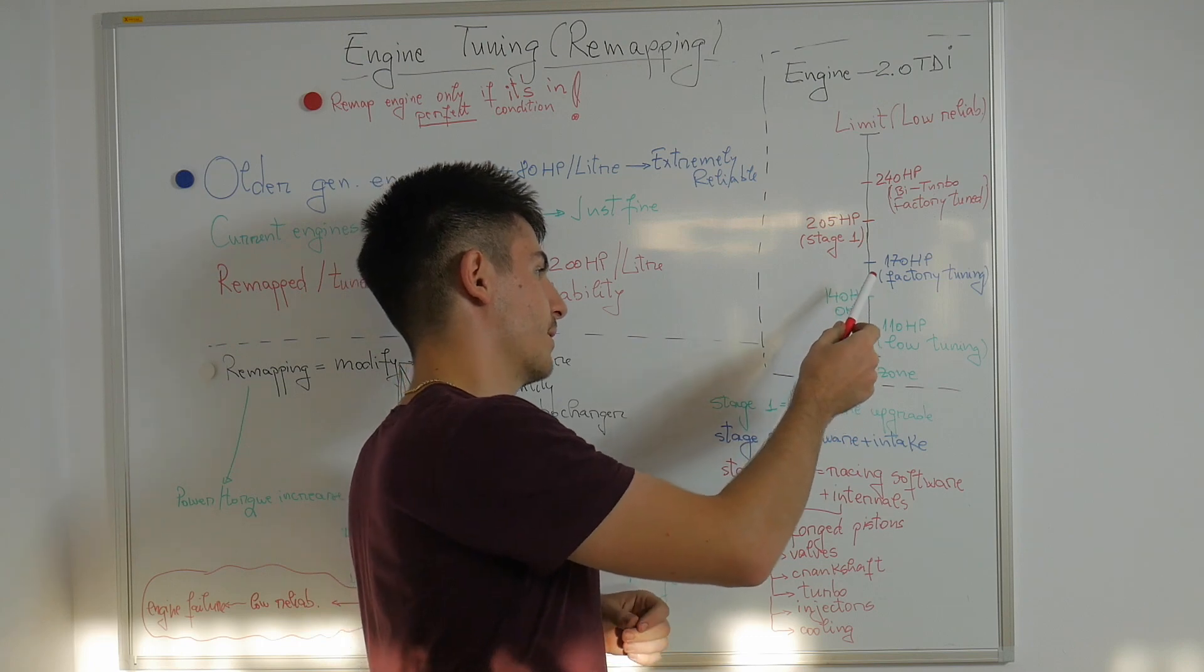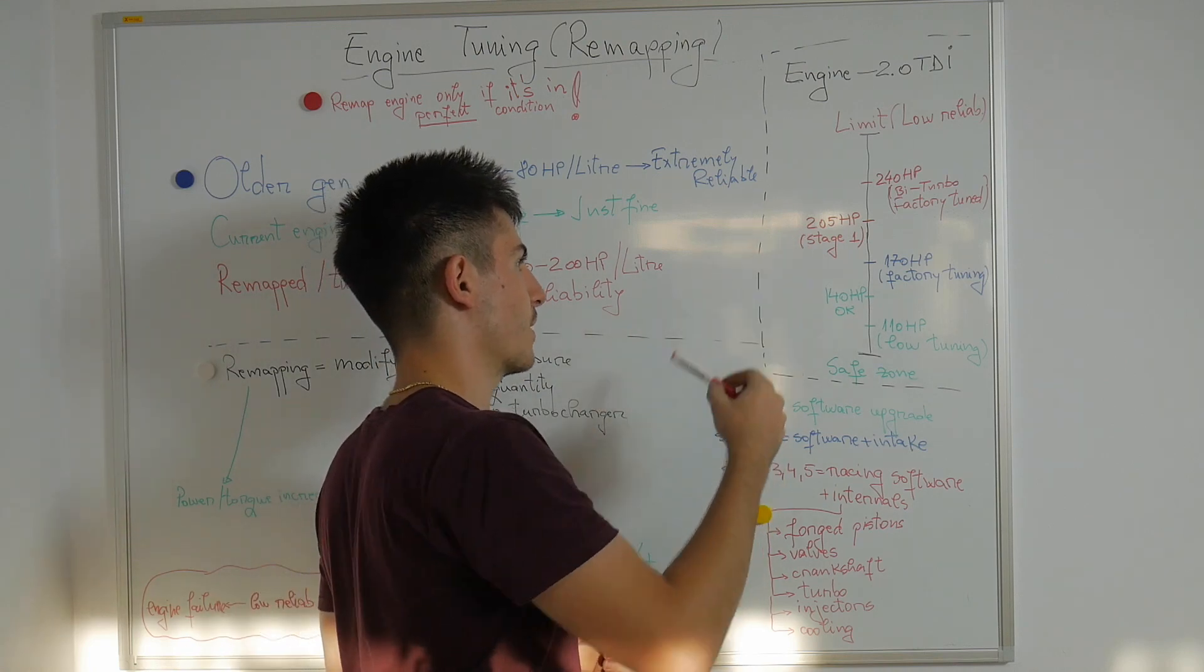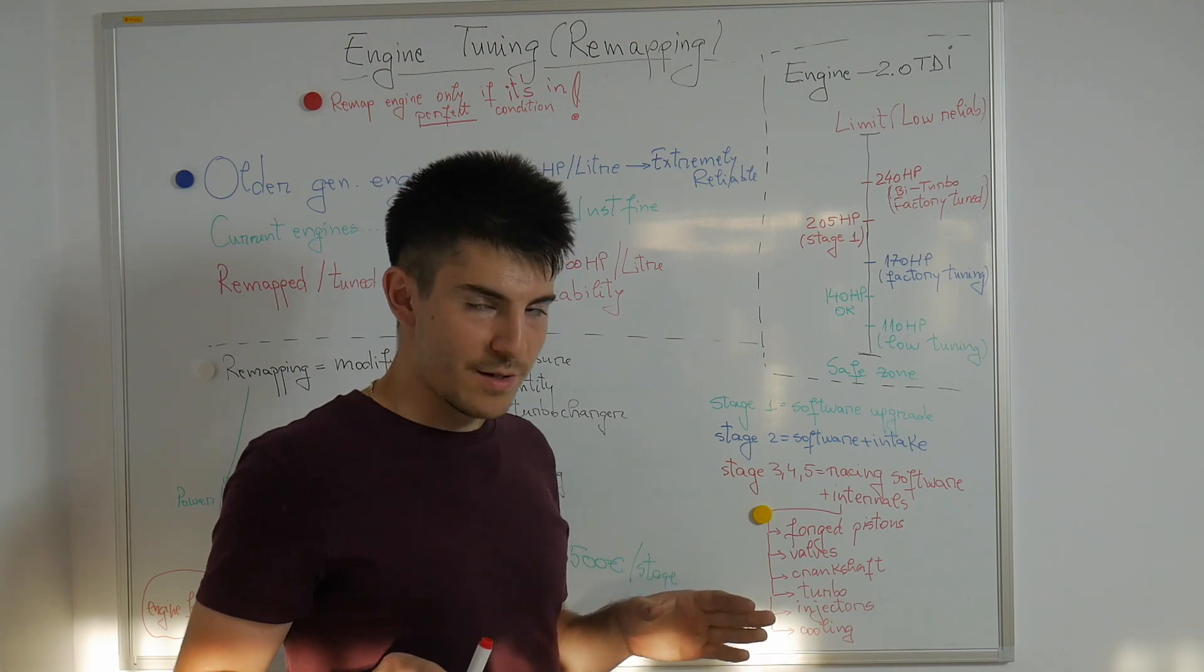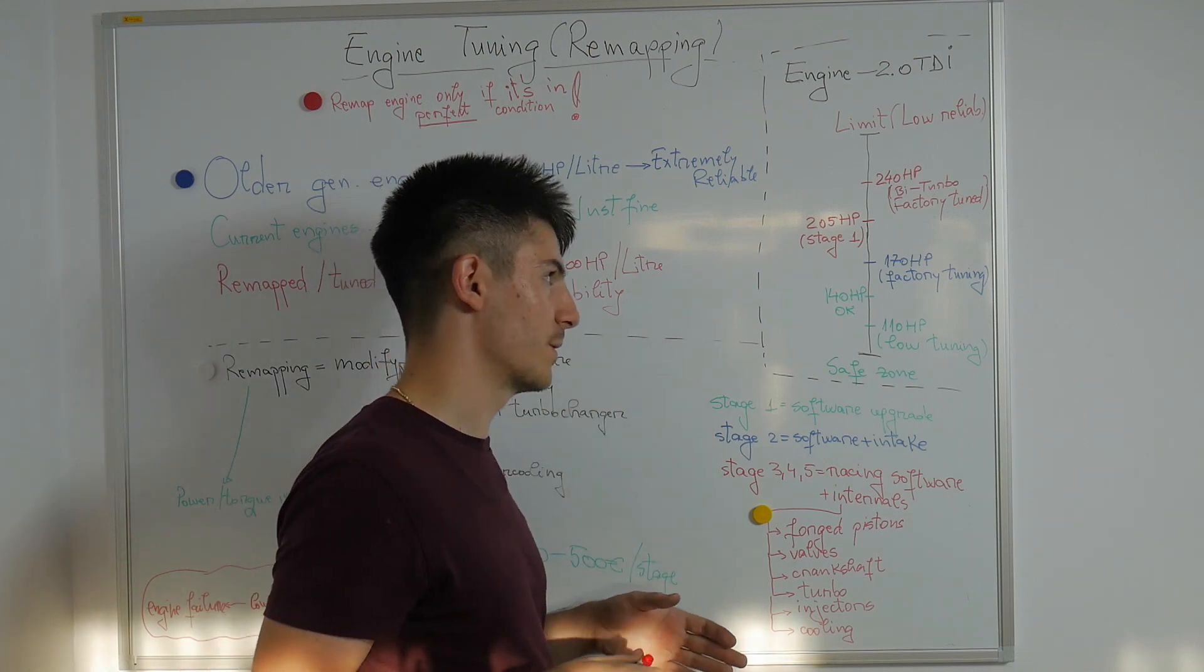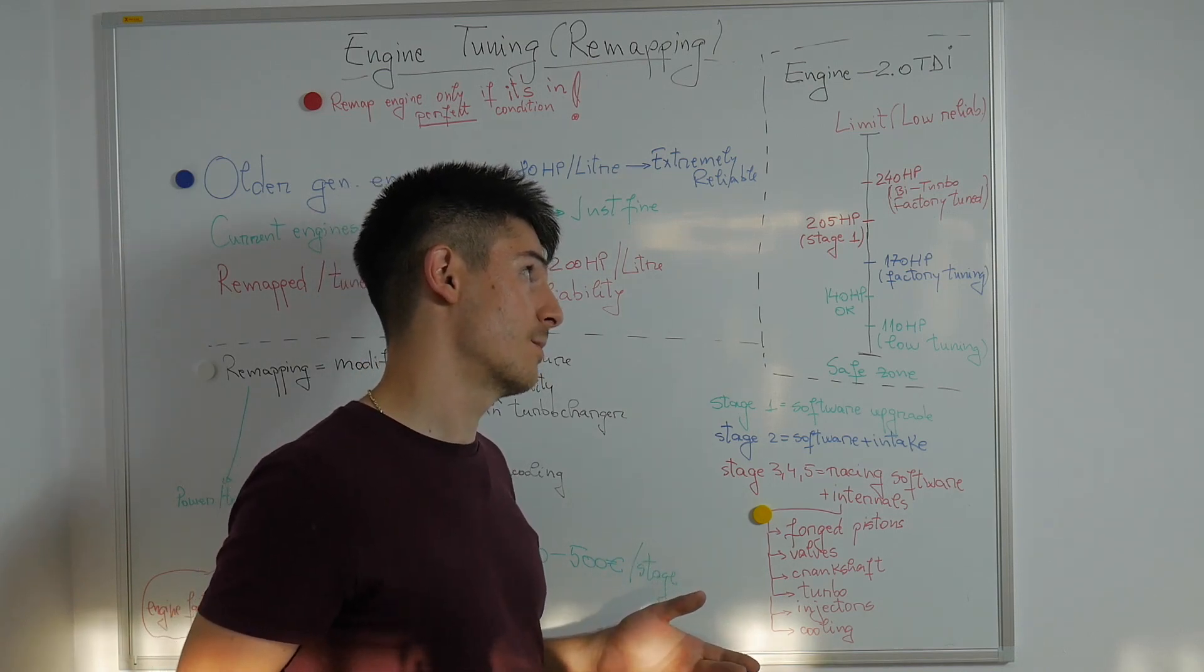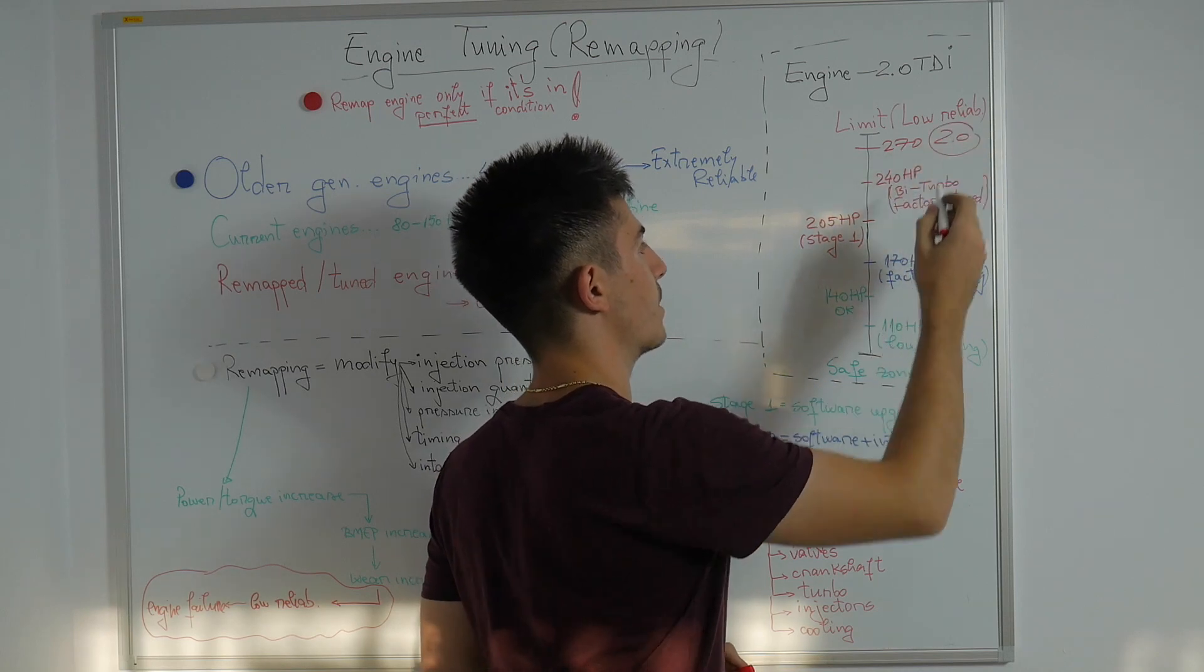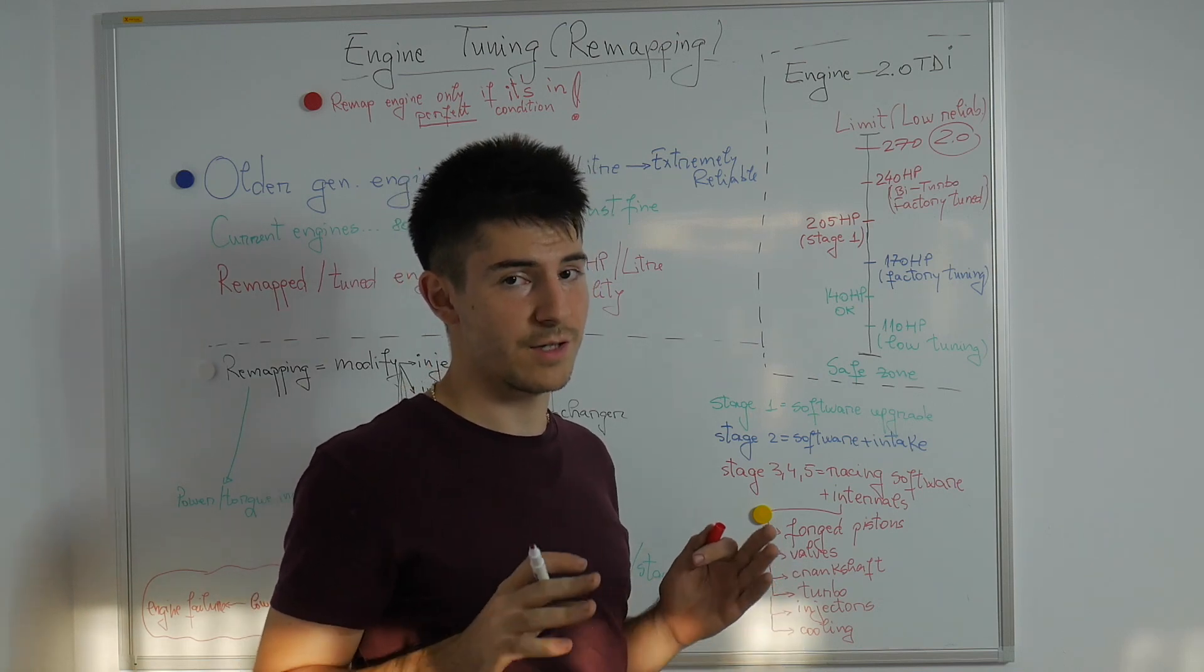If we would remap the factory 170 horsepower version of the engine, we would obtain 205 horsepower. This version is often generally by famous brands such as RevoTechnic or APR. I'm not sponsored by them but I generally know about them. And the most powerful version of this engine is the 240 horsepower but the engine has two turbochargers. I don't know if you should remap this version, you would probably get around 270 horsepower out of 2 liters which is too much. I don't think that engine could withstand even 100,000 kilometers.